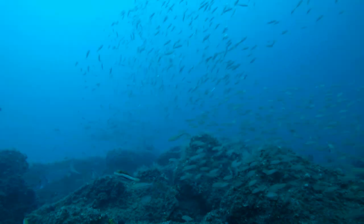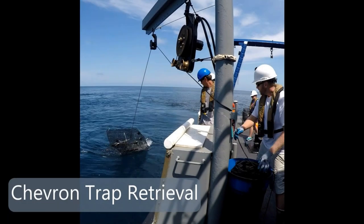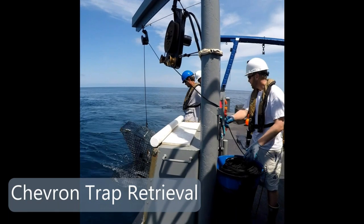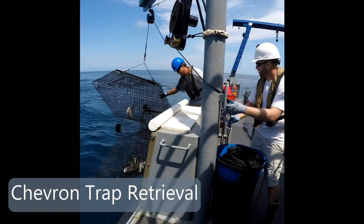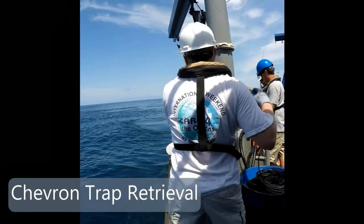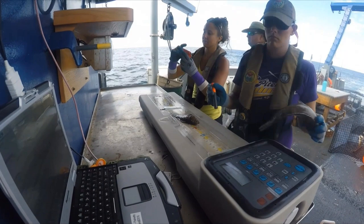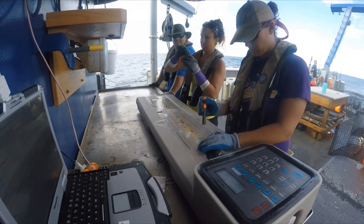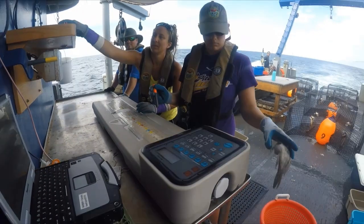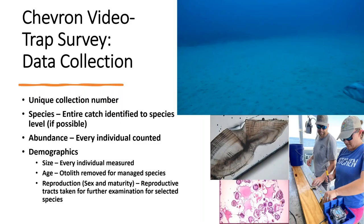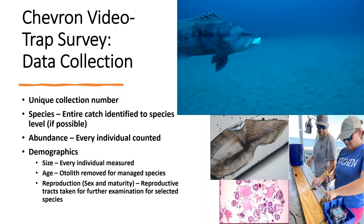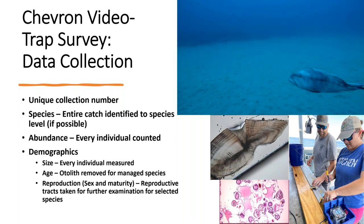We use a hydraulic pot hauler to lift the trap to the surface, then empty it and begin characterizing the catch. This involves recording a lot of data for each deployment. Every video trap is tagged with a unique collection number, and from that point we assign all collected data using electronic fish measuring boards to get information straight into our database. This information includes every fish being identified down to species if possible, counted, and measured.